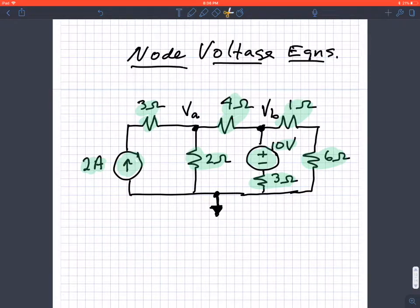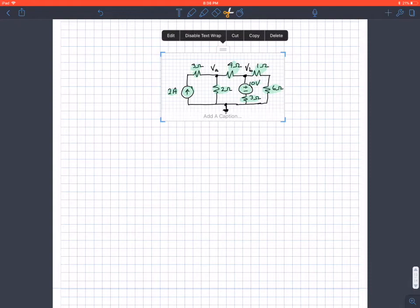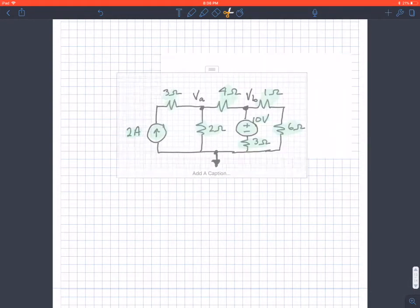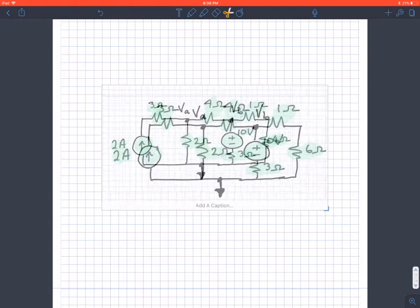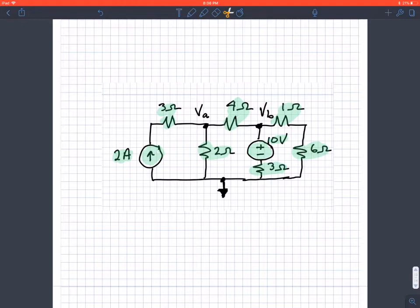I'm going to copy this so we can write over it and erase it. I want to write the node equations at node VA and VB, so let's consider first VA.